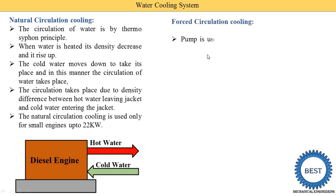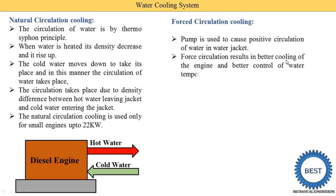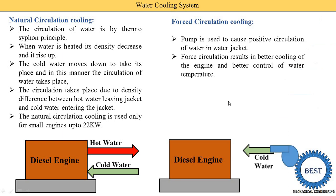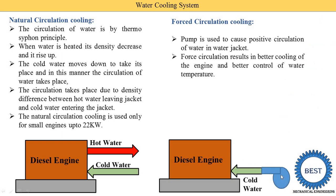Next is the forced circulation cooling system. In forced circulation a pump is used, just as a fan is used for air circulation in a room. In a water cooling system we transport the water by using a pump. A pump is used to cause positive circulation of water in the water jacket. Forced circulation results in better cooling of the engine and better control of water temperatures. With the pump, more mass of water is supplied to the engine — when the mass supplied is more, the heat transfer is increased. We know the heat transfer equation Q = m·Cp·ΔT, so when m increases the heat transfer increases. That is why it gives better control of water temperature and allows us to reject more heat from the diesel engine.